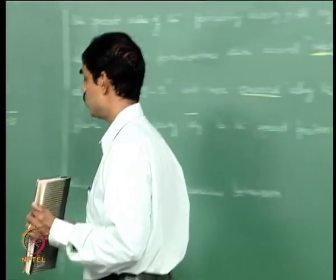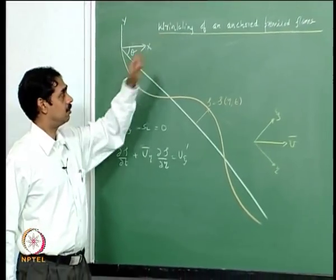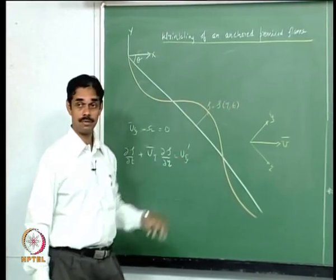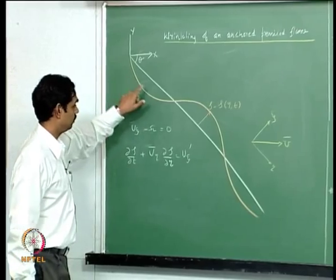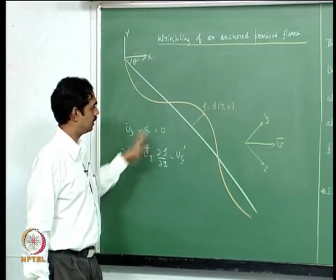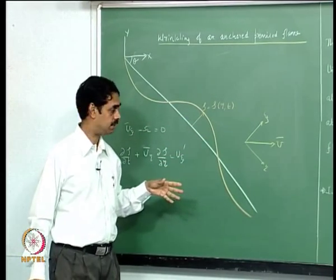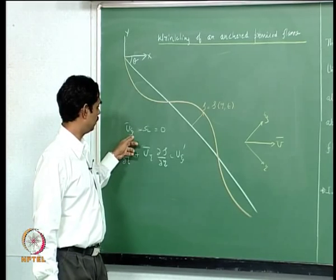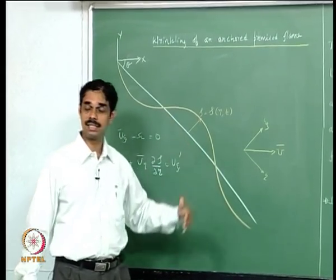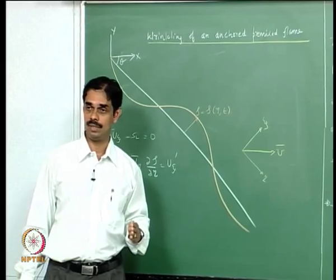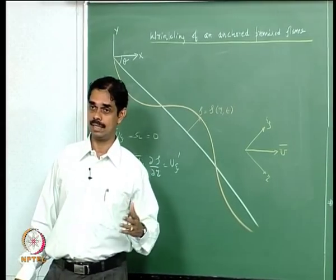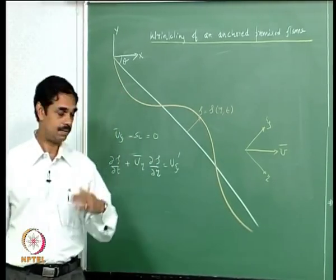In the last class we were trying to work out a simple differential equation for looking at the wrinkling of an anchored premixed flame. We looked at a geometry where the white line shows the mean flame shape and zeta is the displacement of the flame with respect to the mean flame shape. We have the relation u_psi_bar minus S_L equal to zero, consistent with the idea that the flame stays when the feed velocity equals the flame propagation velocity. Otherwise, if there is no feed velocity, the flame travels at speed S_L, but if you supply gas at speed S_L, the flame stays.